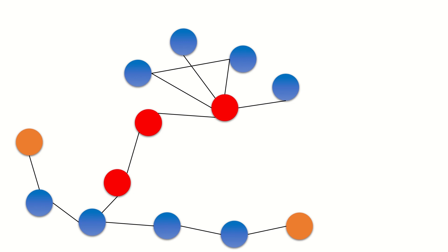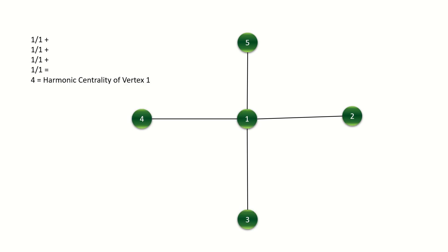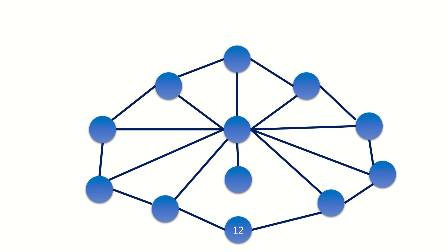Yet there is a problem here — this is not normalized for the size of the graph. That means we can't compare vertices in graphs of different sizes. For example, say we have a graph of five vertices. The harmonic centrality of the middle vertex, vertex 1, is 1 + 1 + 1 + 1 = 4. Now say we have a graph of 12 vertices. Vertex 12 has a harmonic centrality of 5.5.